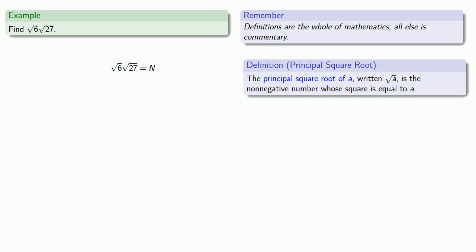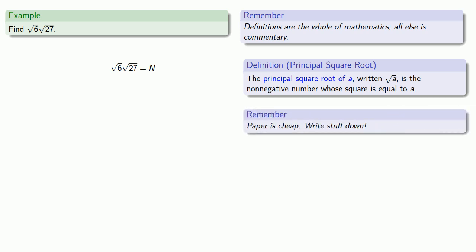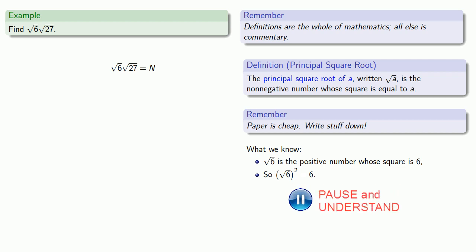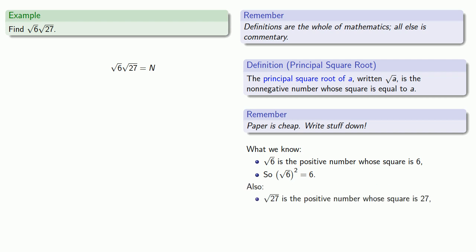Now it's important that we know this, but another useful idea to remember: paper is cheap — write stuff down. We may know it, but it's a lot easier to work with if we actually see it written in front of us. So we know that square root of 6 is the positive number whose square is equal to 6, which tells us square root of 6 squared is equal to 6. Also, square root of 27 is the positive number whose square is equal to 27, so square root of 27 squared is equal to 27.